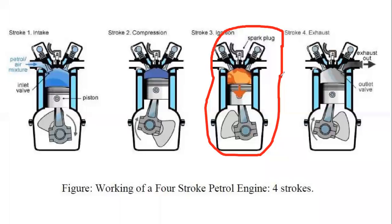Temperature and pressure are also proportional, so pressure also increases very much. There was already huge pressure, and burning adds more. This total pressure gives a push to the piston, moving it from TDC to BDC — that is the power stroke.